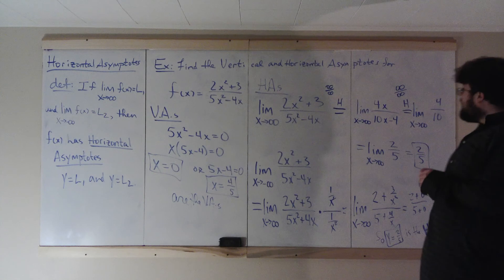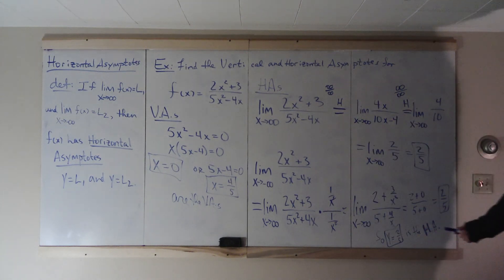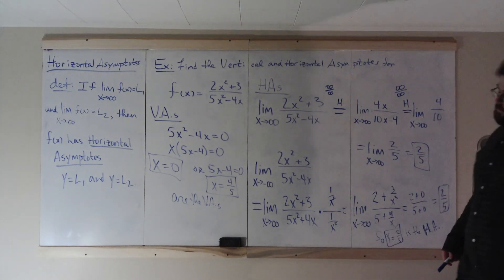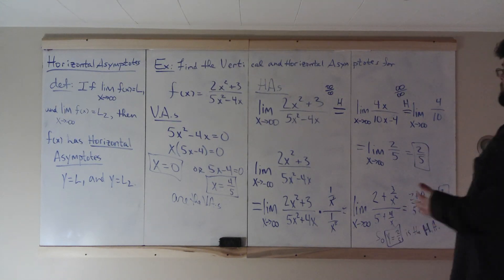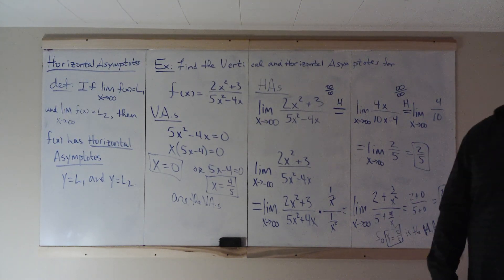For a horizontal asymptote, the two limits could be the same — giving only one asymptote — or different, giving two horizontal asymptotes, as in the previous example.